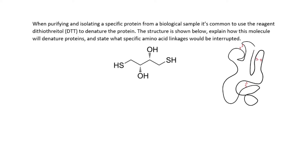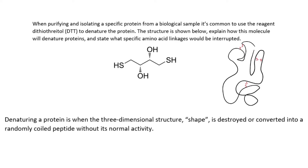When you're denaturing a protein, denaturing is when the three-dimensional structure or shape is destroyed or converted into a randomly coiled peptide without its normal activity.